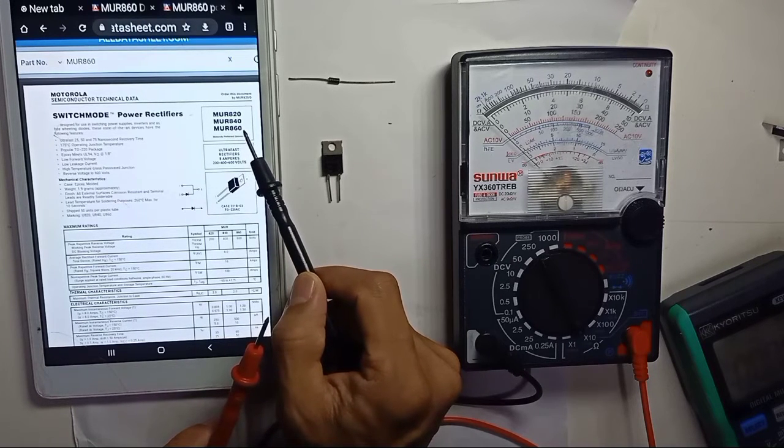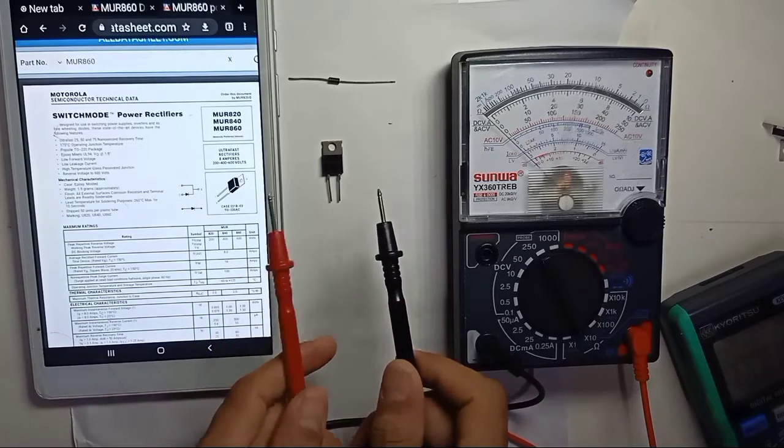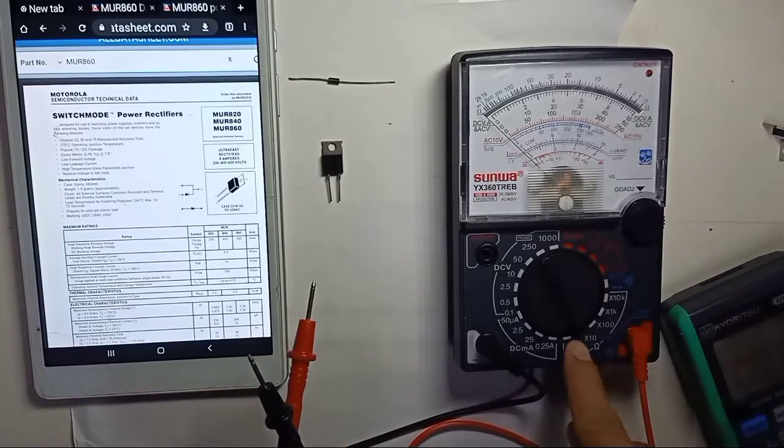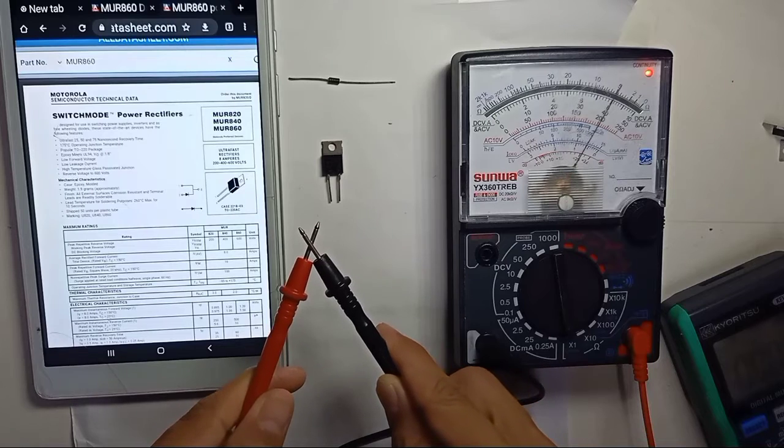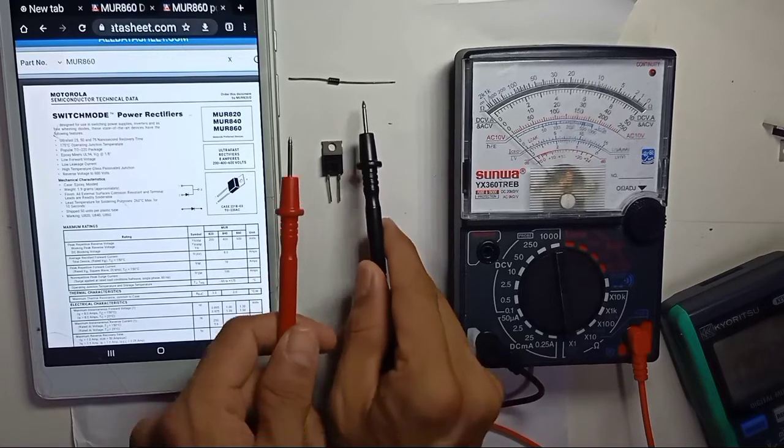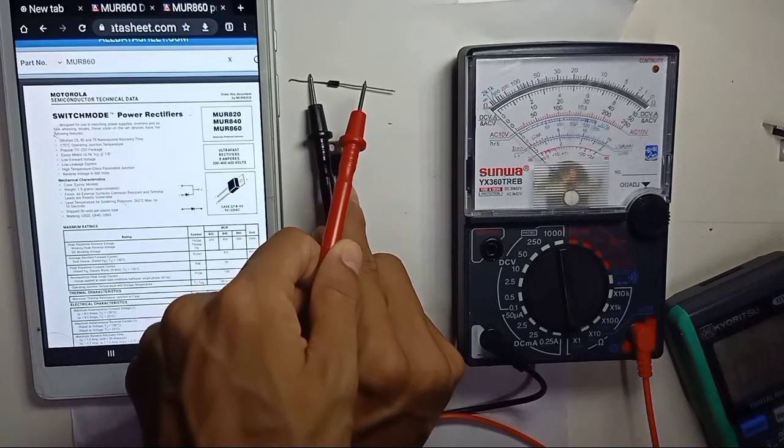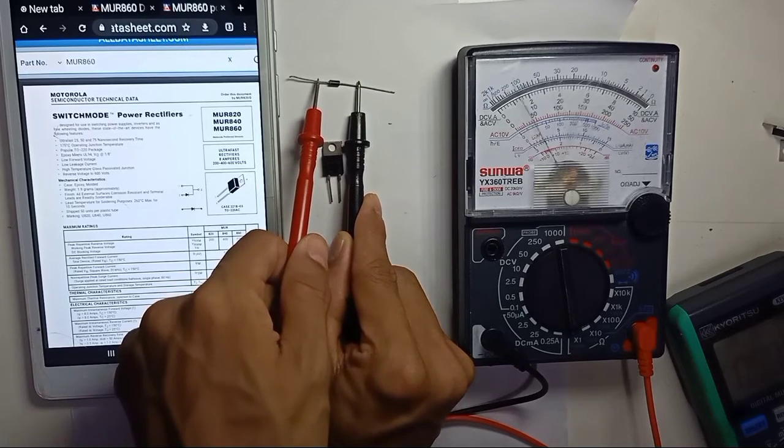How are we going to test using an analog multimeter? You just select ohms times one, which is for connectivity. This is exactly the same as testing a normal diode. The diode is anode to cathode. If cathode to anode, they will not conduct.